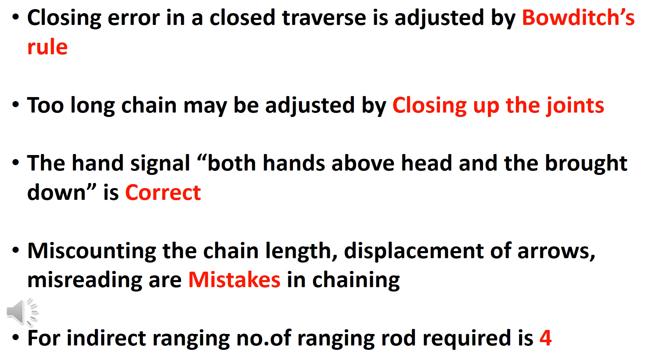There are two rules: Bowditch rule and Transit rule. Bowditch rule is also called the compass rule.